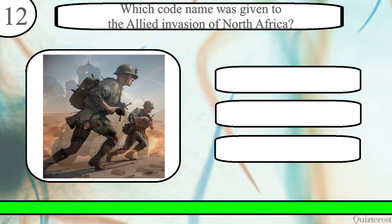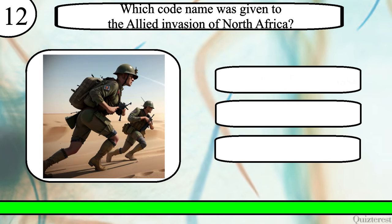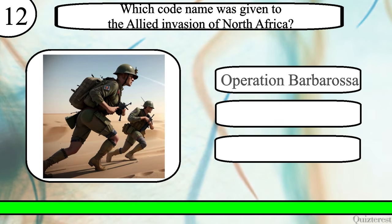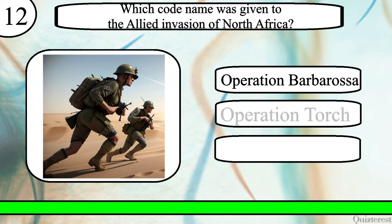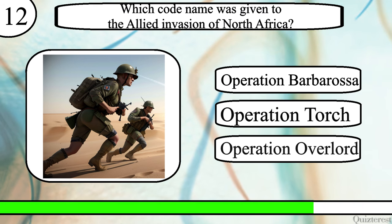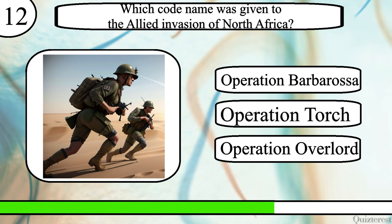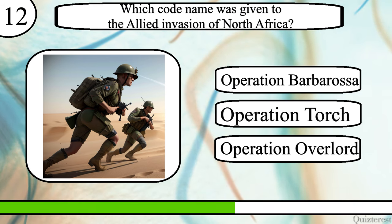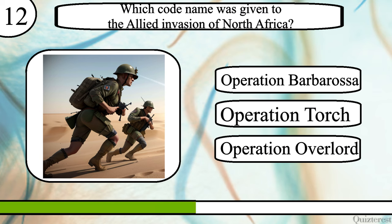Question 12. Which codename was given to the Allied invasion of North Africa? Operation Barbarossa, Operation Torch, or Operation Overlord?